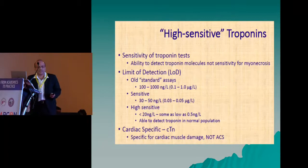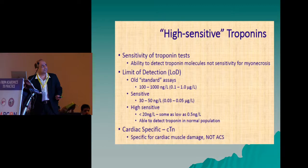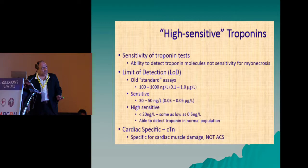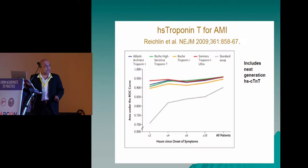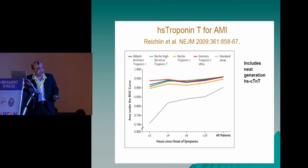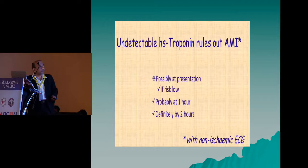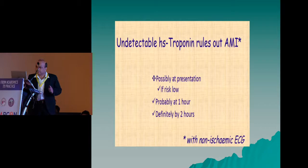The only drawback of troponin — that it is released after four to six hours — is filled in by high-sensitive troponin T. Conventional troponins need a value of 100 to 1000 nanograms per liter to be detected, while high-sensitive troponin can detect values as low as less than 20 nanograms per liter. High-sensitive troponin can be detected as early as two hours or even less. A negative high-sensitive troponin on admission can virtually rule out acute myocardial infarction, and if it is negative at two hours, you can definitely rule out myocardial infarction.